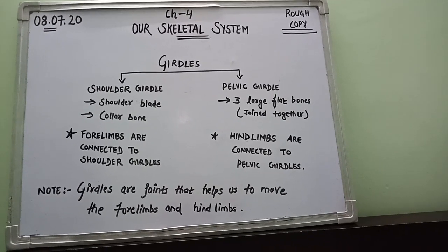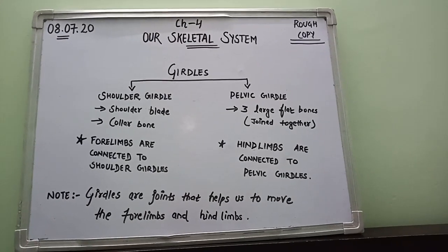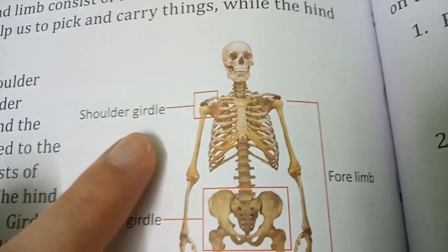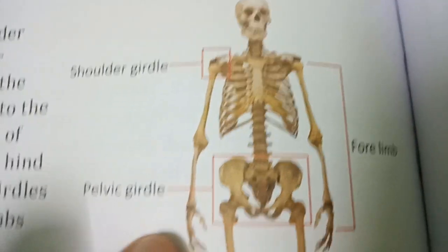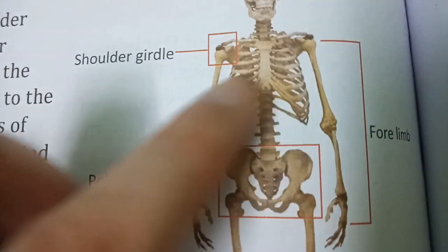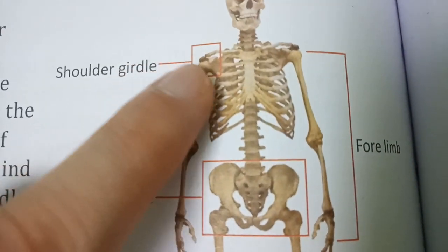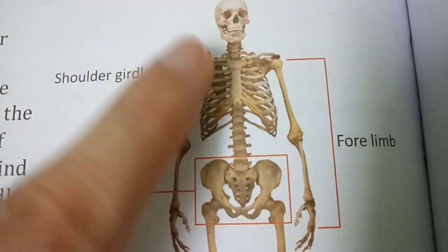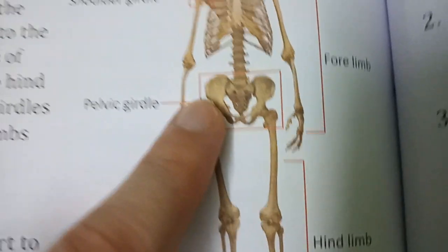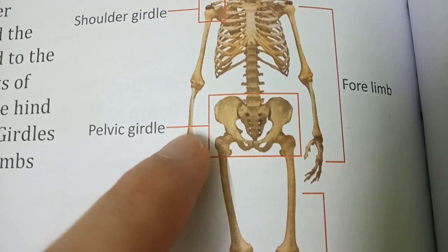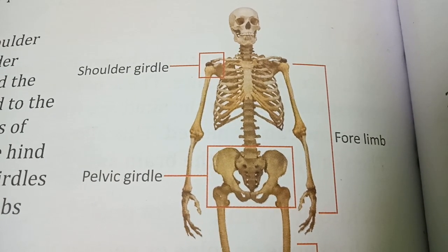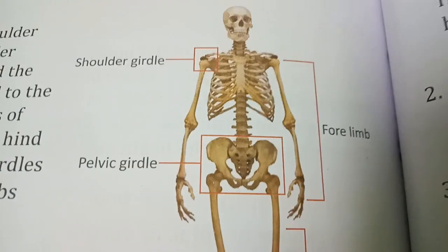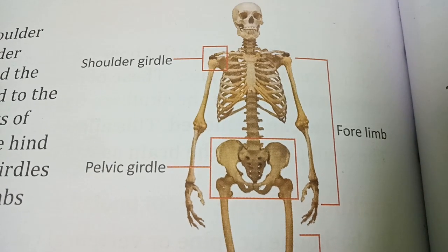Girdles are joints that help us to move the forelimbs and hind limbs. If girdles were not there, we would not be able to walk or move our hands and legs, because these are all essential for the movement of our body. The bones of forelimbs are attached to the shoulder girdle, and the bones of hind limbs are attached to the pelvic girdle, allowing us to perform various activities and exercises.